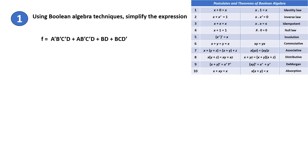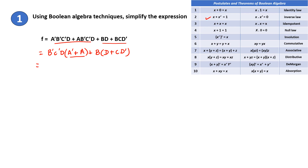Problem 1. Let's solve this. First take these two terms. Take B'C'D as common. Then take B as common from the remaining, so A' plus A. These two give A' plus A, which is equal to 1 as per the inverse law. So B'C'D into 1.